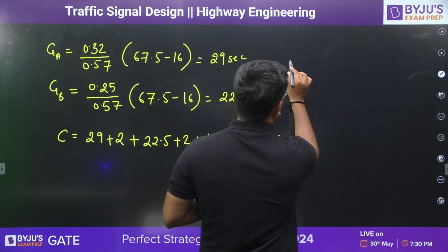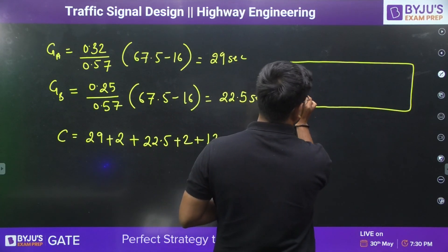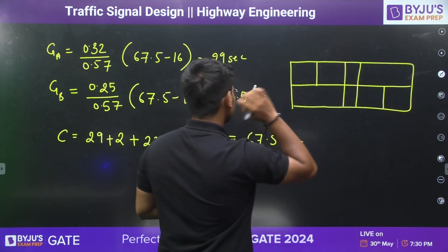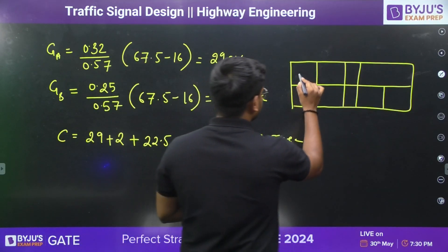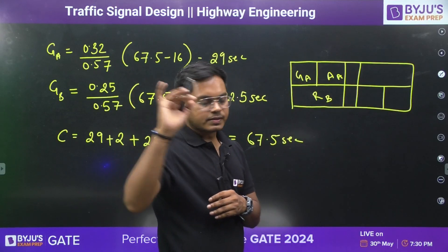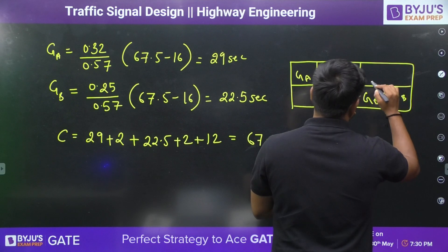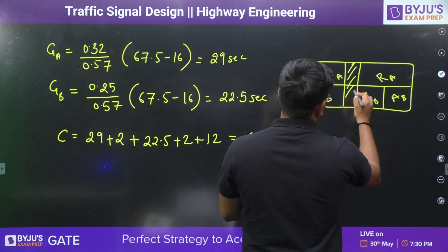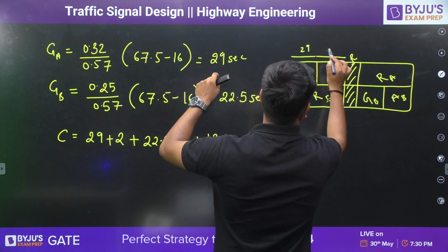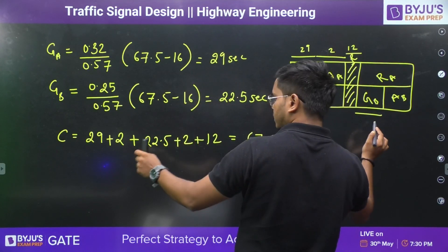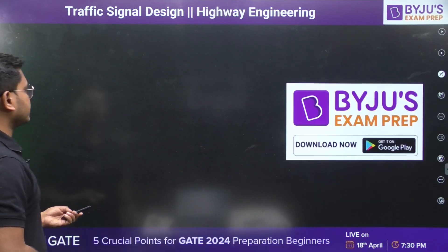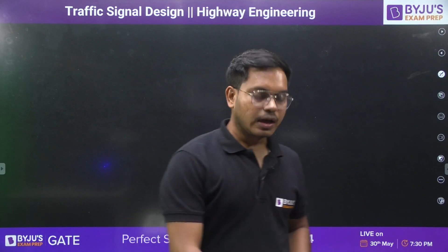We can make a phase diagram to understand this even better. When there is green light on road A (29 seconds), then amber on road A (2 seconds), there is red on road B. Similarly, when there is green on road B (22.5 seconds), then amber on road B (2 seconds), there is red on road A. And this all red time is 12 seconds. If you add all of them — 29 + 2 + 12 + 22.5 + 2 — you get 67.5 seconds. This is all about the Webster method.